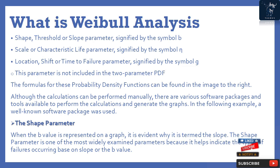The location parameter G is not included in the two-parameter PDF. The formulas for these probability density functions can be found in the accompanying image. Although calculations can be performed manually, various software packages are available to perform the calculations and generate the graphs. The shape parameter B — when represented on a graph — is evident why it is termed the slope. It is one of the most widely examined parameters because it helps indicate the types of failures occurring based on the slope or B value.